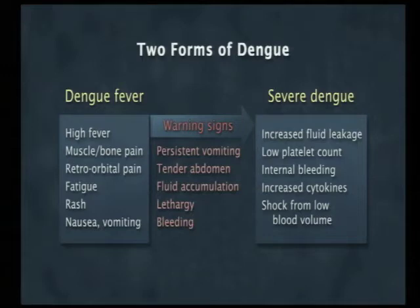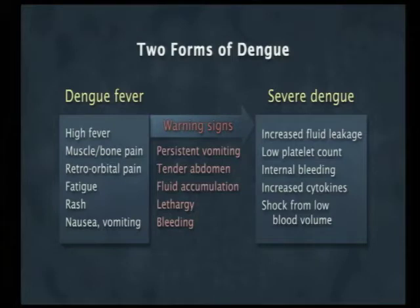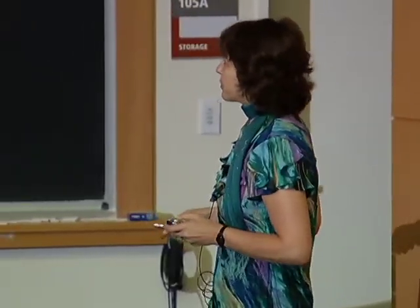Dengue fever is an acute-onset febrile illness, called 'la quebradora' or break bone fever, due to very severe bone and muscle pain. Warning signs include falling platelets, increasing hematocrit, and abdominal pain. Severe dengue is associated with increased fluid leakage, low platelet count, bleeding, and hypovolemic shock from low blood volume.